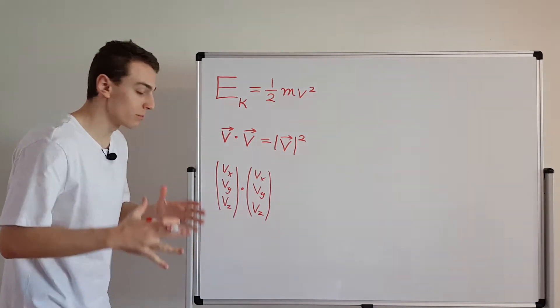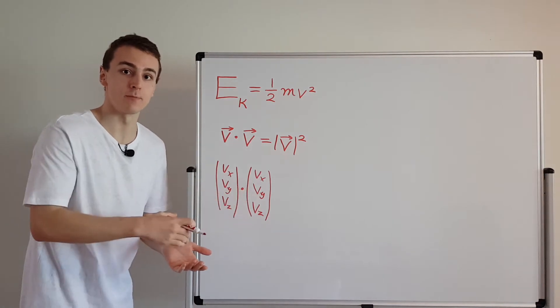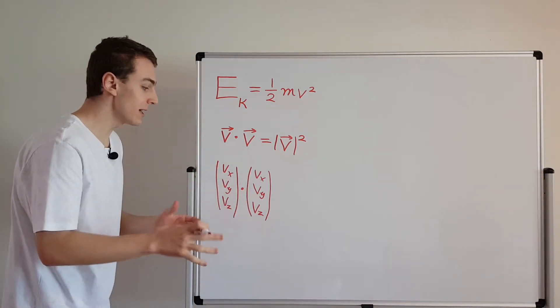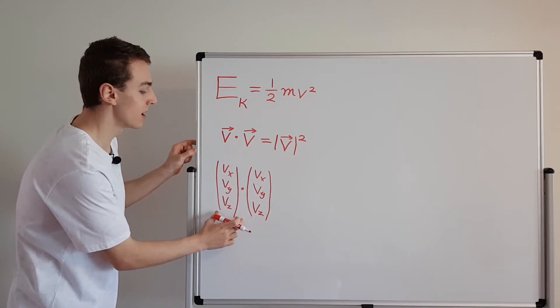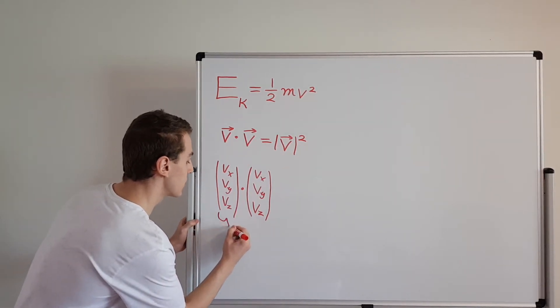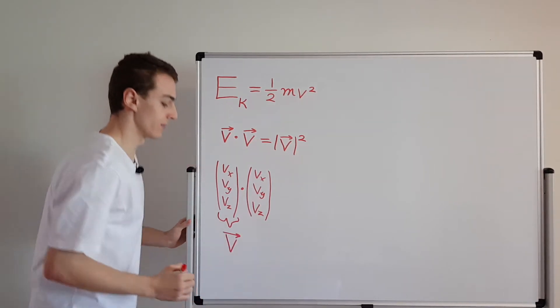But in general, in 3D space, you're going to have these two column vectors which both represent the velocity vector. Each one of these is actually V, the velocity vector.